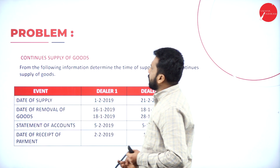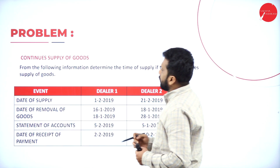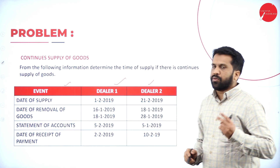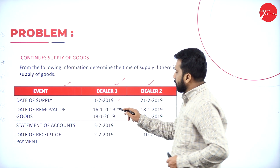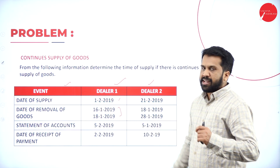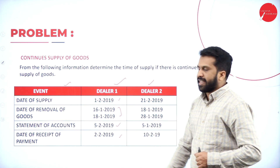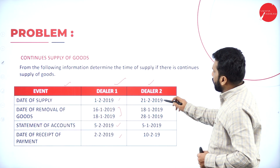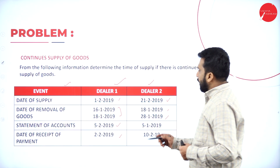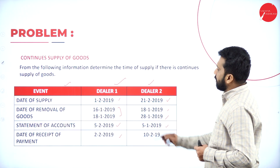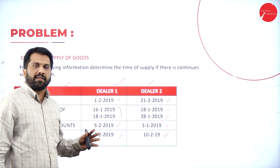The problem on continuous supply of goods: from the following information, determine the time of supply. We have two dealers. Dealer 1: date of supply 1st February, date of removal of goods 16th January and 18th January, statement of account 5th February, date of receipt of payment 2nd February. Dealer 2: date of supply 21st, date of removal 18th January and 1st January, statement of accounts 5th January, date of receipt of payment 10th February.